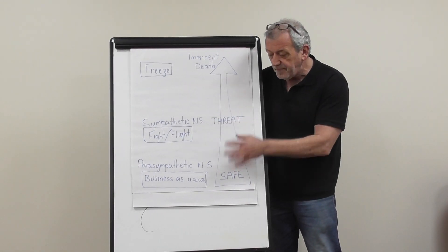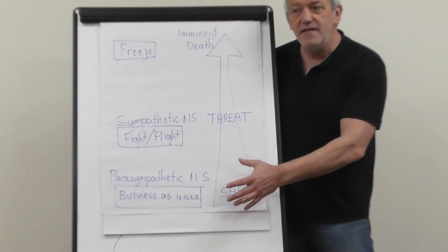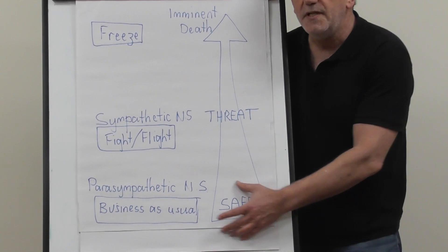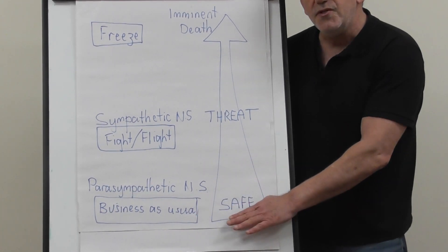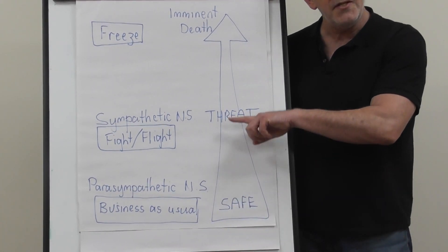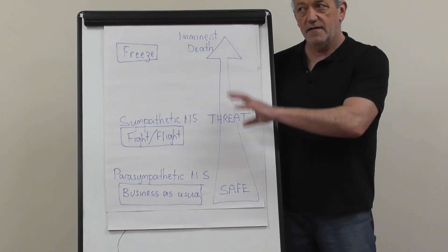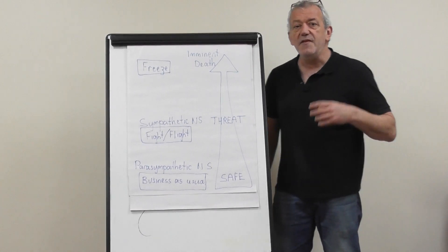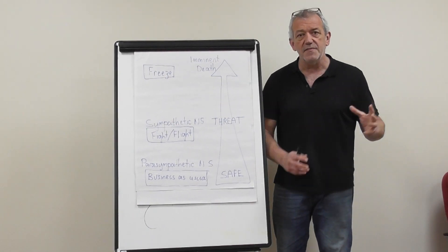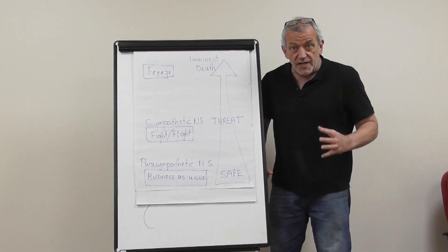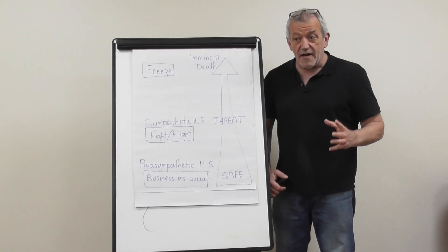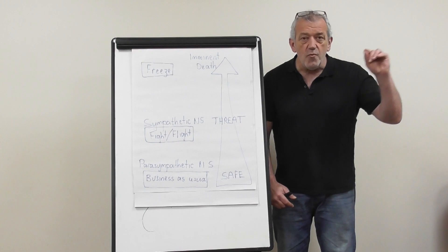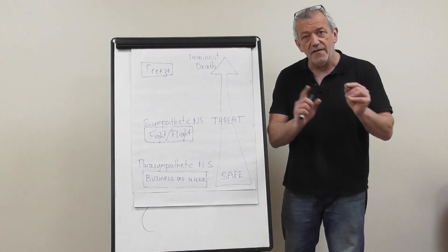When we're in the fight/flight system, the physiological and mental activities that are normally on will turn off if they're not directly engaged in dealing with that threat. For example, if there was a bomb outside and a massive explosion, I might jump — I'd want to look and see where the threat is so I can feel safe.